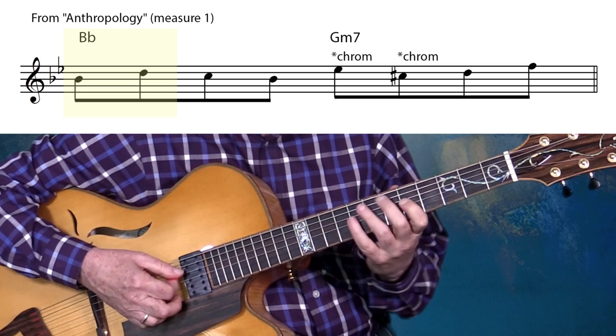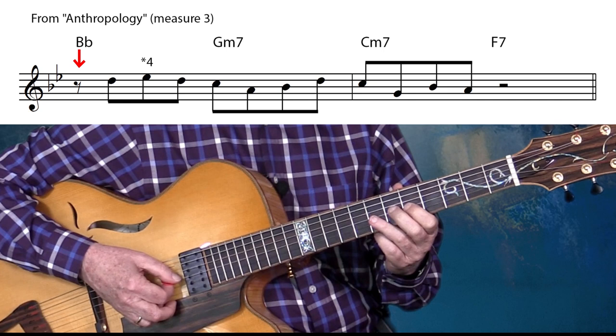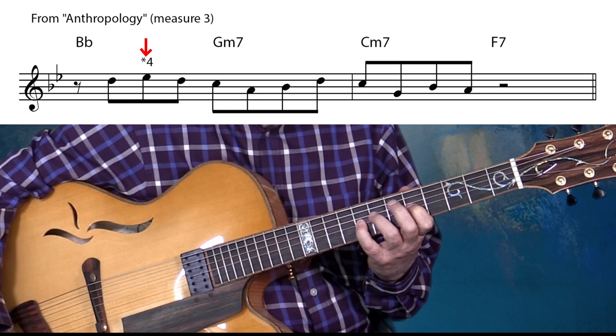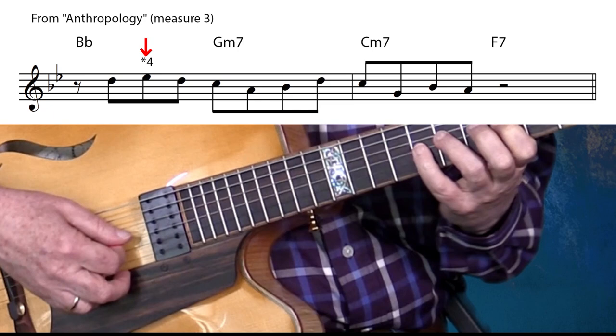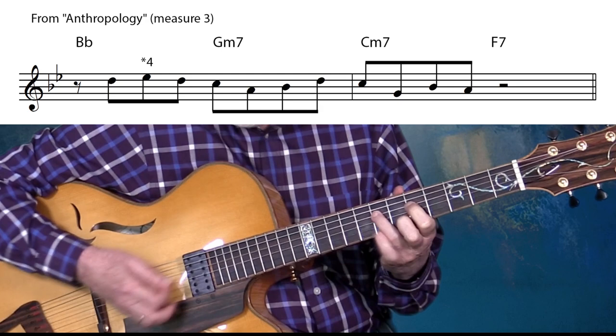He goes from the four to a chromatic which only resolves on the downbeat of four to the three. Now in the same tune, going to the third measure, we have three, four, one — which falls on the downbeat, and on beat two we again have the four.